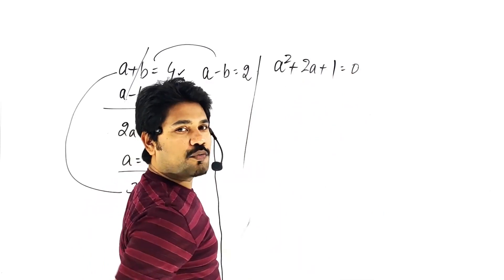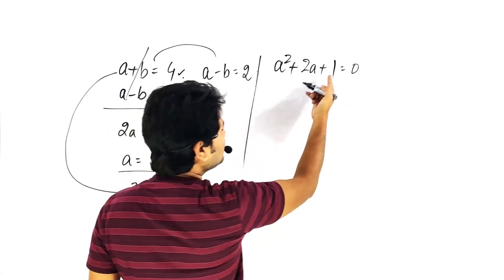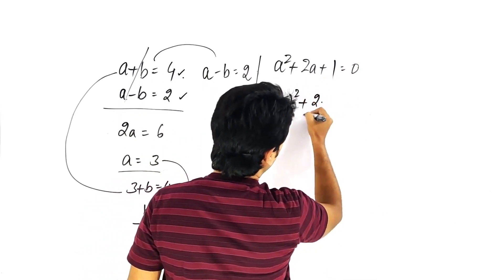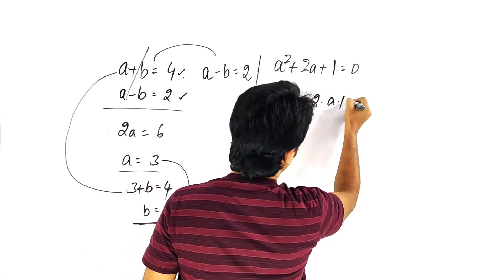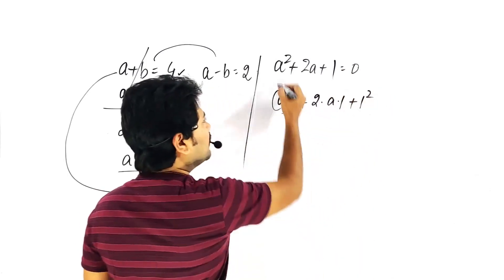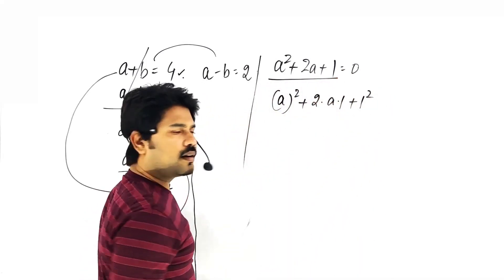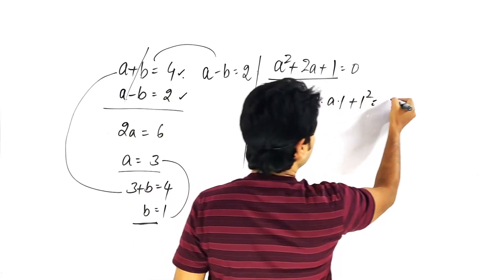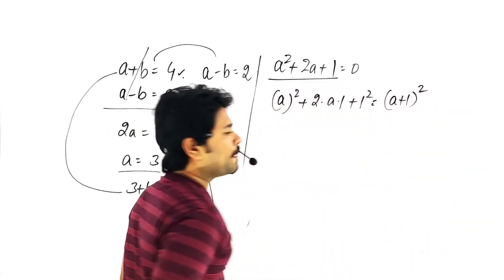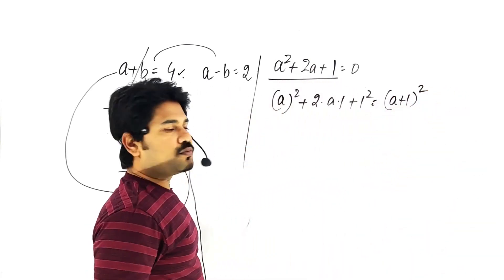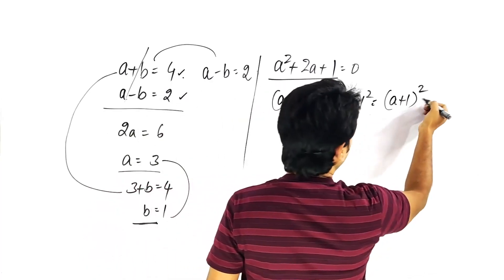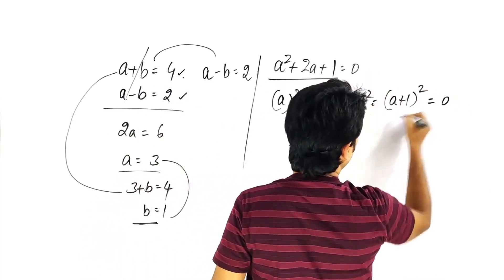What is this? This is the expansion of a plus b whole square. We have a squared plus 2 times a times 1 plus 1 squared, which equals a plus 1 whole square.